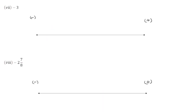Question number 7 is very easy. We place 0, minus 1, minus 2, and then minus 3. Minus 3 is the required point and we name it as capital G.